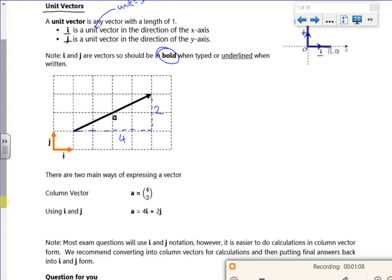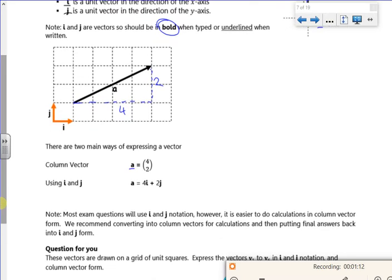So I've got two ways of doing it. I can even show it as a column vector. So the top number is across, the bottom number is up and down, just like the transformations. Or, I can see it as 4i, so 4 across, and 2j, 2 up. There. It's that simple.